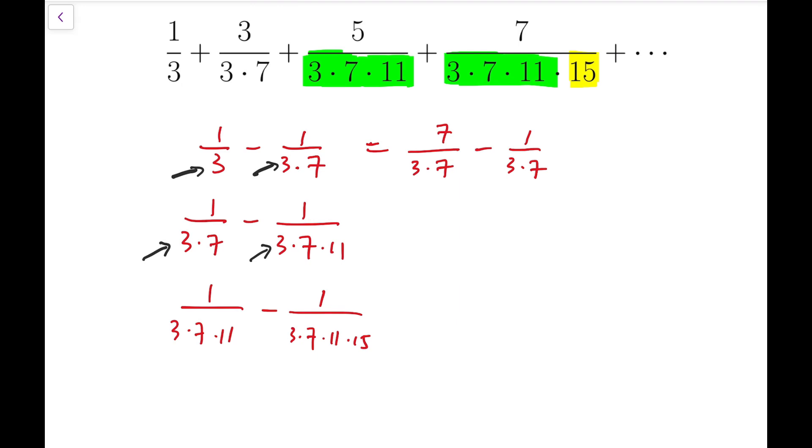So if I subtract this fraction, I will get 6 over 3 times 7. Let's keep it that way. We don't simplify the fraction.